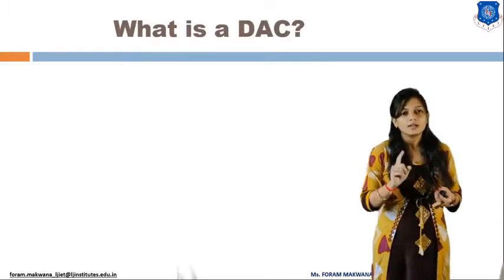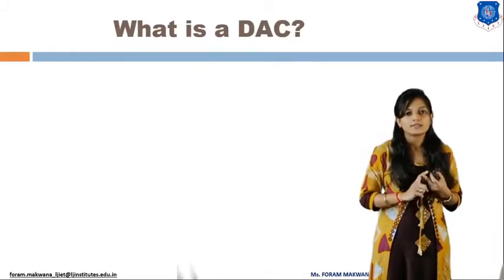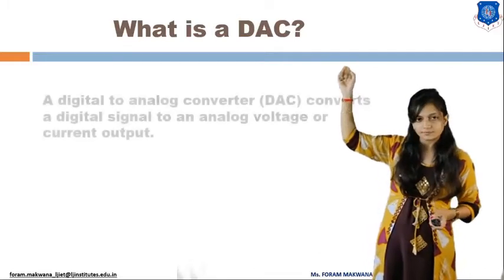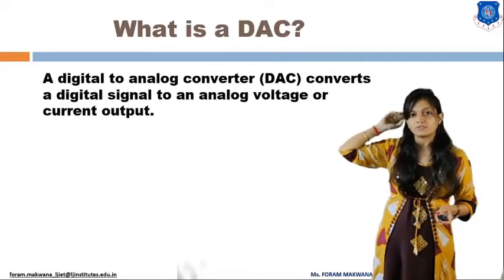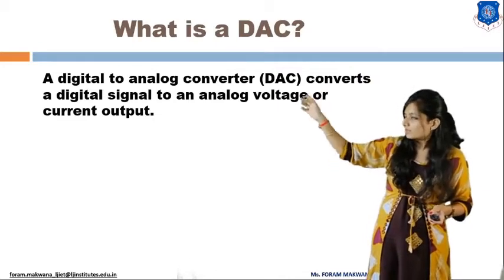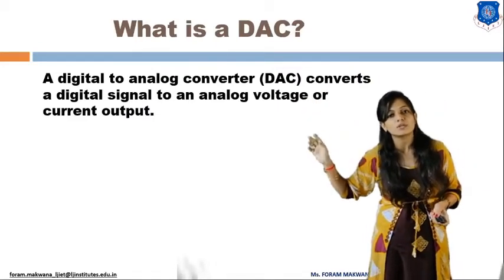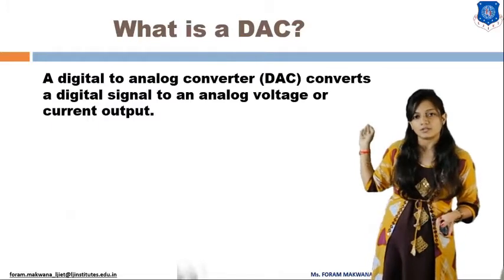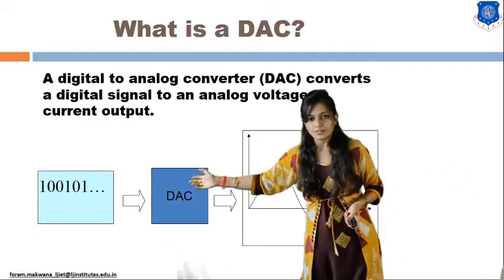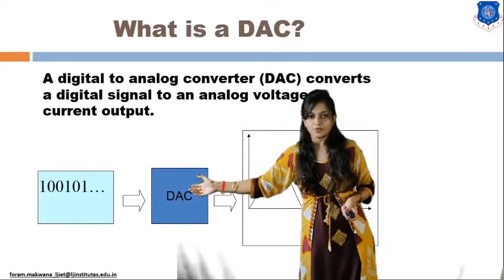A DAC (digital-to-analog converter) converts the digital signal into an analog signal. That means a discrete signal is converted into a continuous analog signal. Discrete refers to binary or digital values.